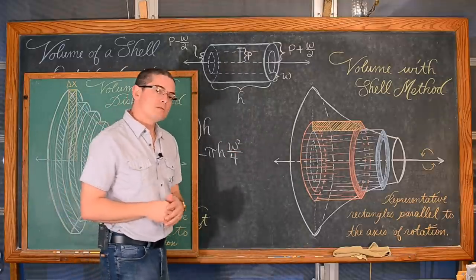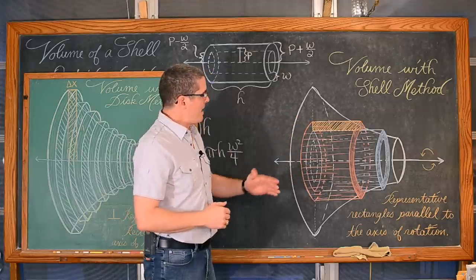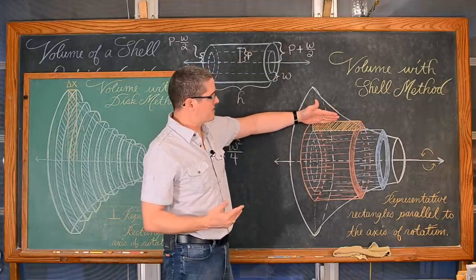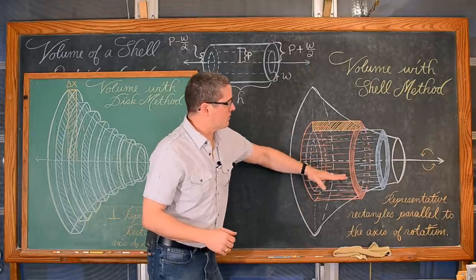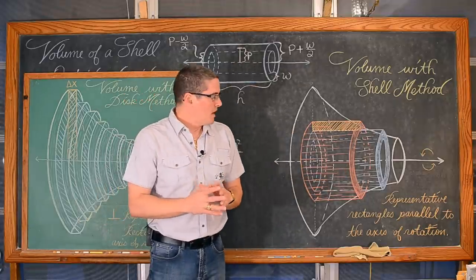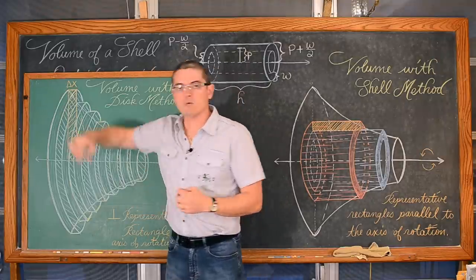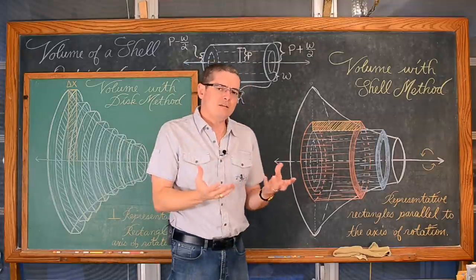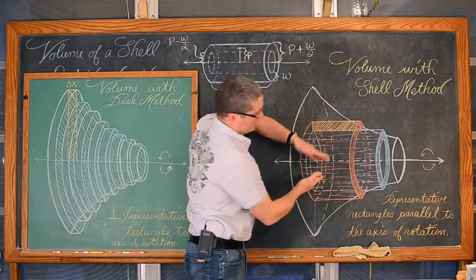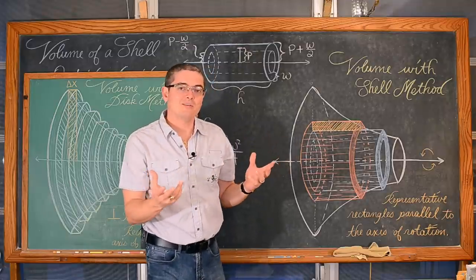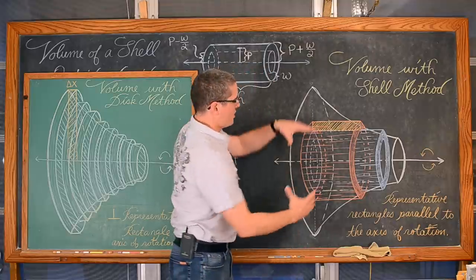Now if we have that same horizontal axis of rotation, you can see with the shell method what is happening is we have another representative rectangle, but it is going to be parallel to the axis of rotation. And as you spin that rectangle around, what you get is a cylinder. And like we allowed these disks to have a width of zero, we are going to be finding the volume of a cylinder, which is π r² times height.